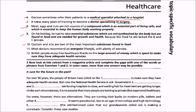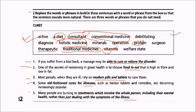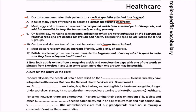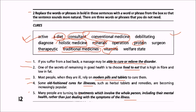Tenth: calcium and zinc are two of the most important substances found in food. These are actually minerals, so we match with minerals. Eleventh: most doctors recommend an energetic lifestyle with plenty of exercise — this is an active lifestyle. The opposite of this is sedentary, which we already saw in exercise one.